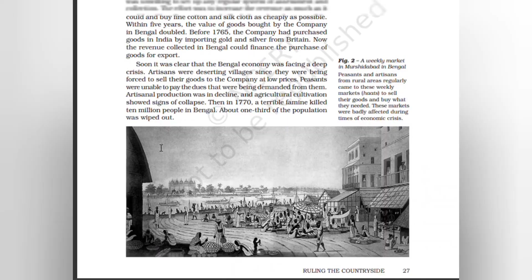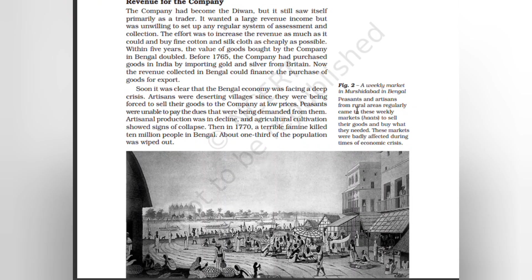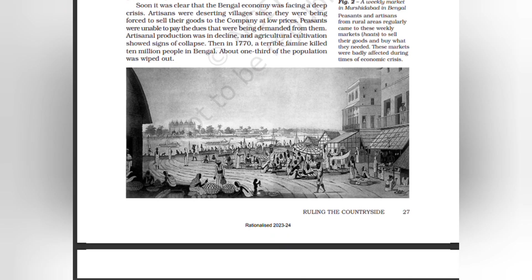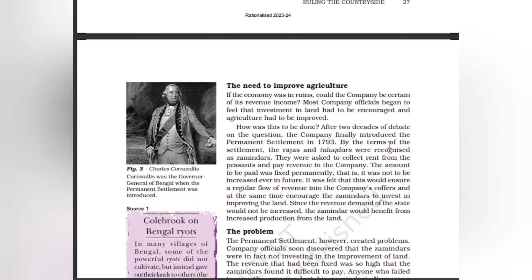Agricultural cultivation showed signs of collapse. Then in 1770, a terrible famine killed 10 million people in Bengal — about one-third of the population was wiped out. Peasants and artisans from rural areas regularly came to weekly markets to sell their goods and buy what they needed. These markets were badly affected during times of economic crisis. If the economy was in ruins, could the company be certain of its revenue income?